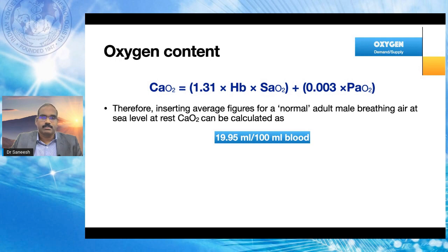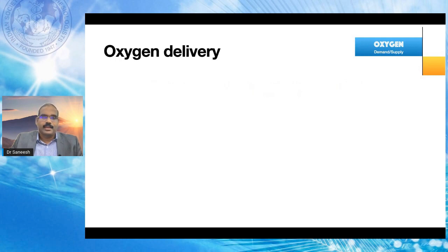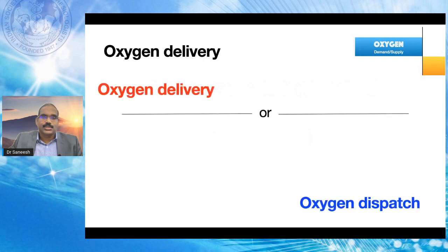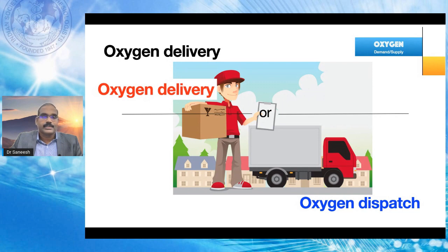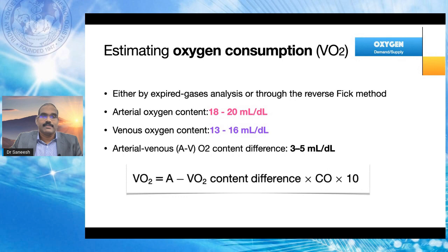Regarding oxygen delivery, there is a historical misnomer — it should more correctly be called oxygen dispatch, as dispatch refers to what we push into the circulation and send to the target. Oxygen delivery proper is actually what the tissues take up. It's like a courier vehicle from Amazon or Flipkart: it carries everything in the wagon, but the destination site receives only a portion of it — that is our oxygen extraction.